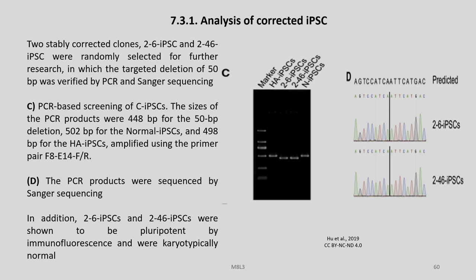Analysis of corrected iPSCs showed the following results: two stably corrected clones — 26-iPSCs and 246-iPSCs — were randomly selected for further research, in which the targeted deletion of 54 base pairs was verified by PCR and Sanger sequencing. In figure C, PCR-based screening of corrected iPSCs is shown. The size of the PCR products were around 448 base pairs for the 50 base pair deletion, 502 base pairs for the normal iPSCs, and 498 base pairs for the HA iPSCs, amplified using the primer pair F8-E14-F/R. In figure D, the PCR products sequenced by Sanger sequencing are shown. The 26-iPSCs and 246-iPSCs were shown to be pluripotent by immunofluorescence and were karyotypically normal.